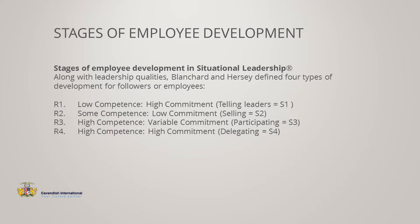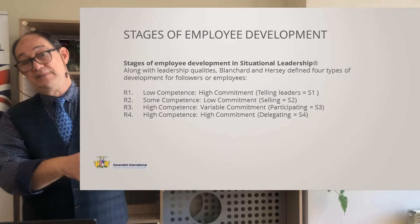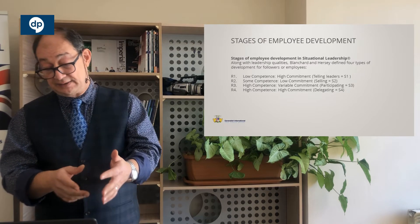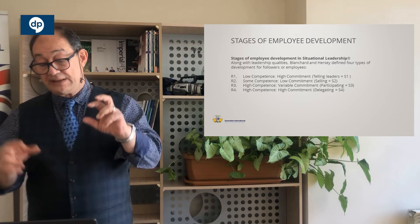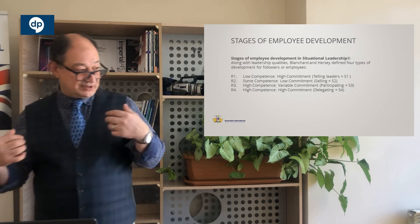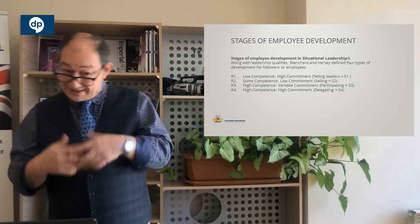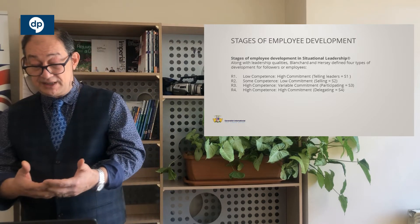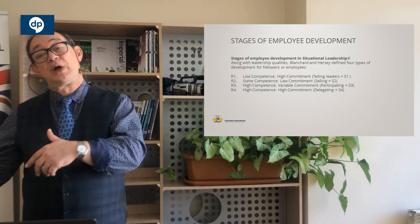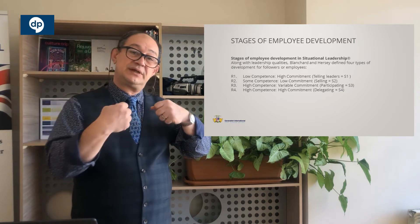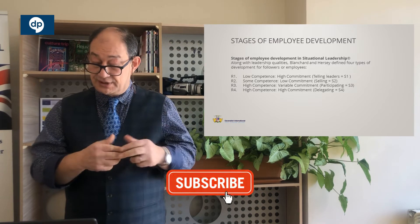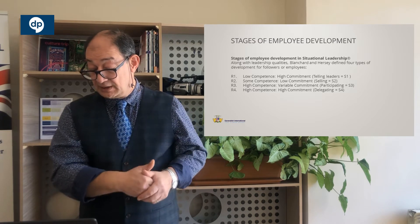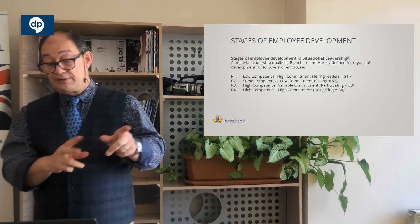Within this leadership style, there are also four stages of employee or team member development, called R1 to R4. R1 is low competence, high commitment — a team member who doesn't know much or hasn't got long-term experience, but is really committed. At this stage of development, S1 works: you are guiding them, in a telling leadership style, you explain things to them, you coach them, and obviously the competence level is low.